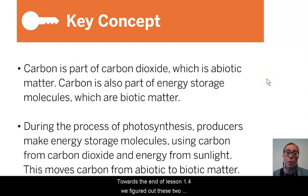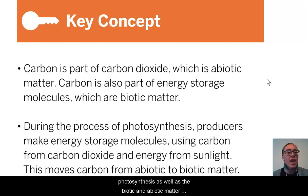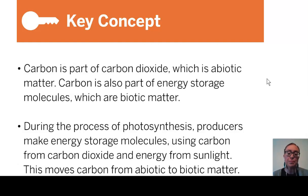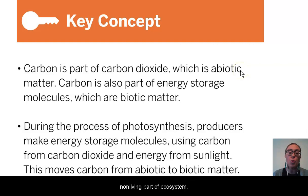Towards the end of lesson 1.4, we figured out two important key concepts about photosynthesis, as well as the biotic and abiotic matter within the ecosystem involved in this process. We determined that carbon, which is a type of atom, is a part of carbon dioxide in the air, which is an abiotic, or non-living, part of the ecosystem.